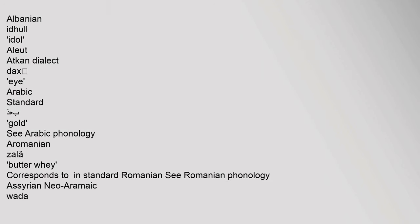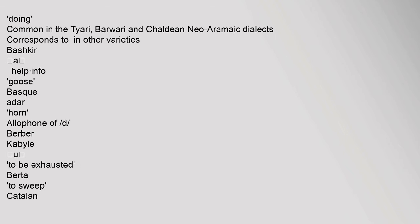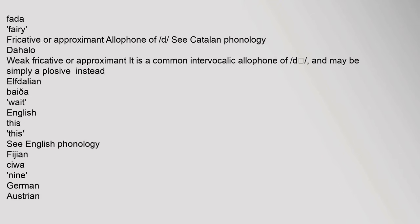Occurrence examples include: Albanian, with the 'eth' sound appearing in the Aitkin dialect; Arabic Standard, where 'dhhb' means gold (see Arabic phonology); Aromanian, where it corresponds to a sound in standard Romanian; Assyrian Neo-Aramaic, common in the Tyari, Barwari, and Chaldean Neo-Aramaic dialects; and Bashkir and Catalan, where it appears as a fricative or approximate allophone.